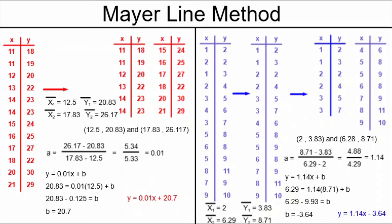We arrange the a and the b into the y equals ax plus b form and we have the equation of our regression line. This is the Mayer Line method and it is today's daily dose of math. Please like, subscribe and share.